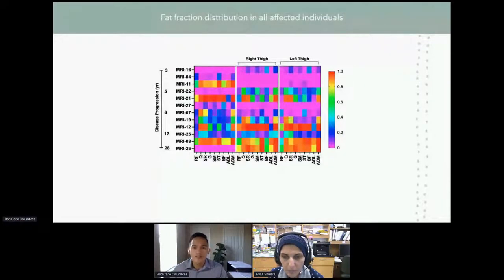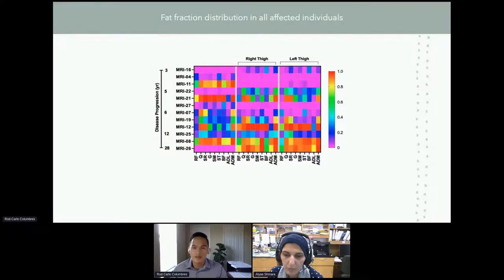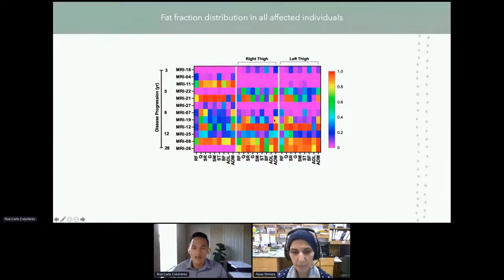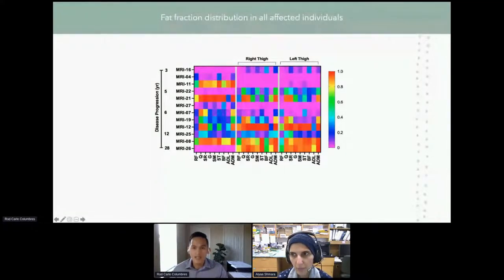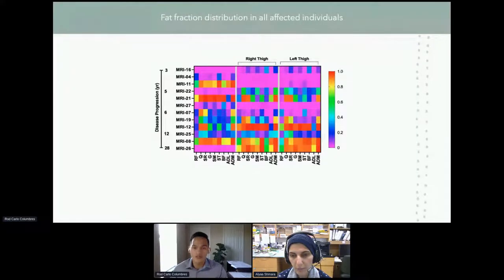Looking again at each muscle per patient organized in increasing disease progression, but this time using the fat fraction values instead of semi-quantitative scoring, we can see that high fat fraction values are seen in thigh muscles of patients with longer disease duration, seen earliest at five years and worse at 20 years, again supporting our initial conclusion.